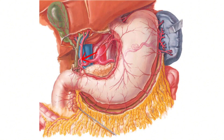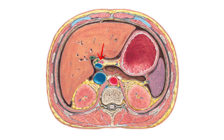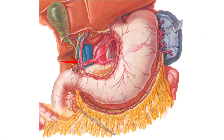The hepatic artery proper, or hepatic artery, is the ascending terminal branch of the common hepatic artery. It ascends toward the liver in the free edge of the lesser omentum, to the left of the bile duct and anterior to the hepatic portal vein — so it is part of the portal triad. It gives off the right gastric artery and finally terminates near the porta hepatis by dividing into the right and left hepatic arteries.